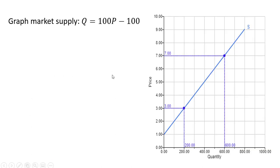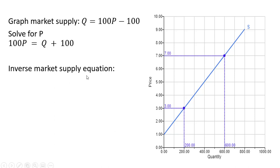Let's go ahead and graph that market supply. The graph of Q equals 100p minus 100 is over here on the right. To graph market supply, I like to solve for price — that's technically the inverse market supply equation. Dividing through by 100, we have the inverse market supply. If Q is 0, the vertical intercept is 1, and this has a slope of 1 over 100. Plugging in Q equals 200, price equals $3; plugging in 600 units, price equals $7.